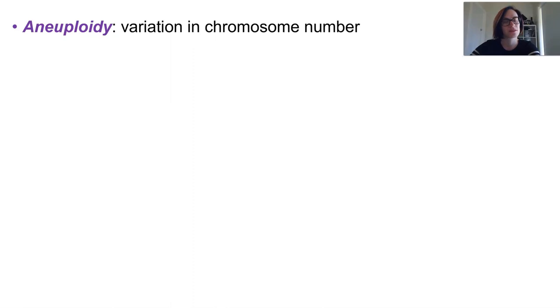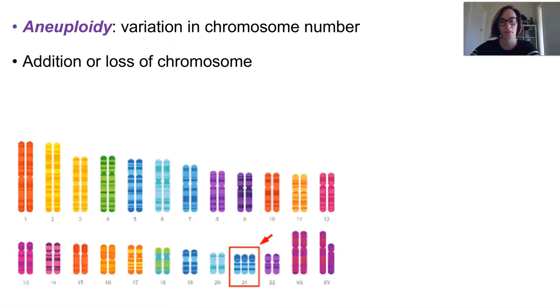Aneuploidy occurs when there is a variation in the number of chromosomes which appear in that cell line. Essentially it describes the addition or loss of an entire chromosome and these situations frequently arise at meiosis.